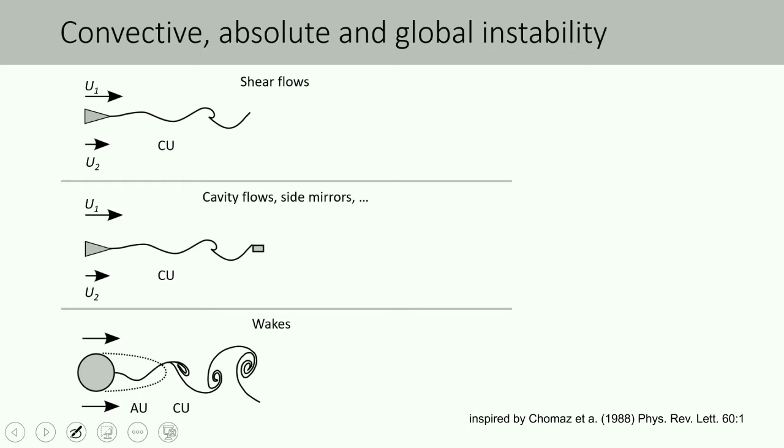The first case here shows the effect of a shear layer from two different parallel velocities. The Kelvin-Helmholtz type of instability in the box is a typical case of convective instabilities where the shear layer acts as an amplifier of selective frequencies.